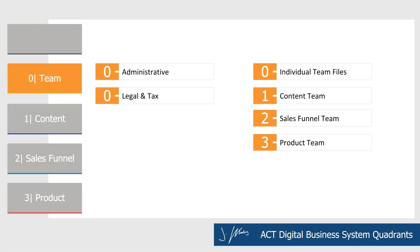In the team category, we have all of our administrative files — the boring tax and legal documents, contracts. We also have all the files that pertain to training people on our team. So if we have any processes, like we have processes for posting YouTube videos or hiring new people, we put all of that operation-style stuff inside of the team folder.